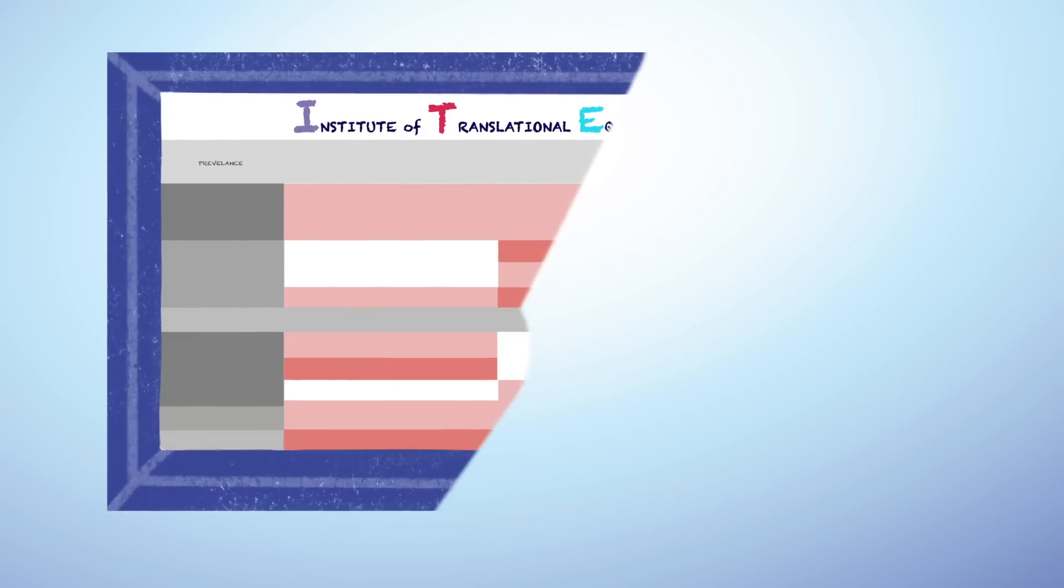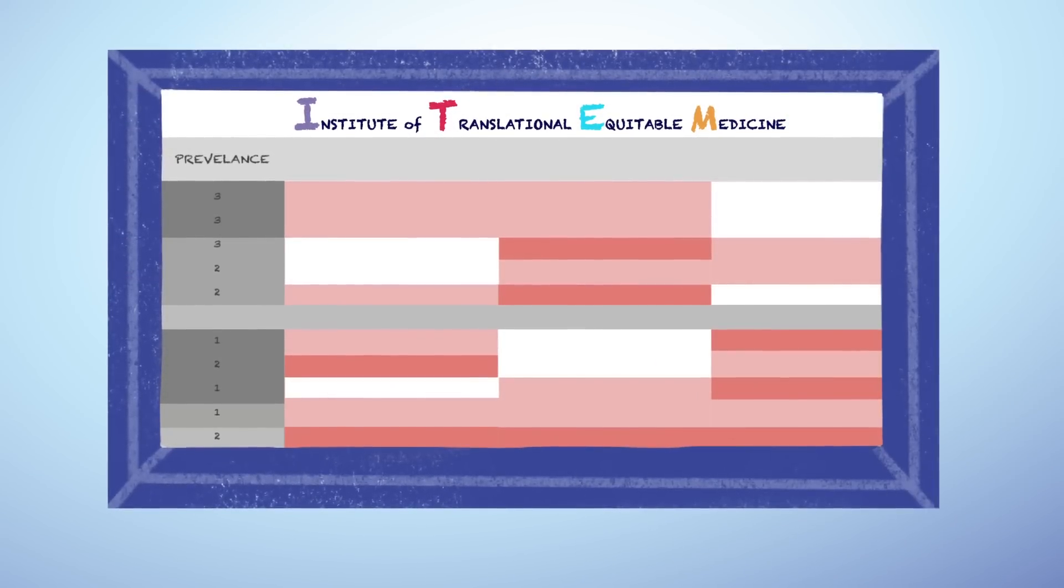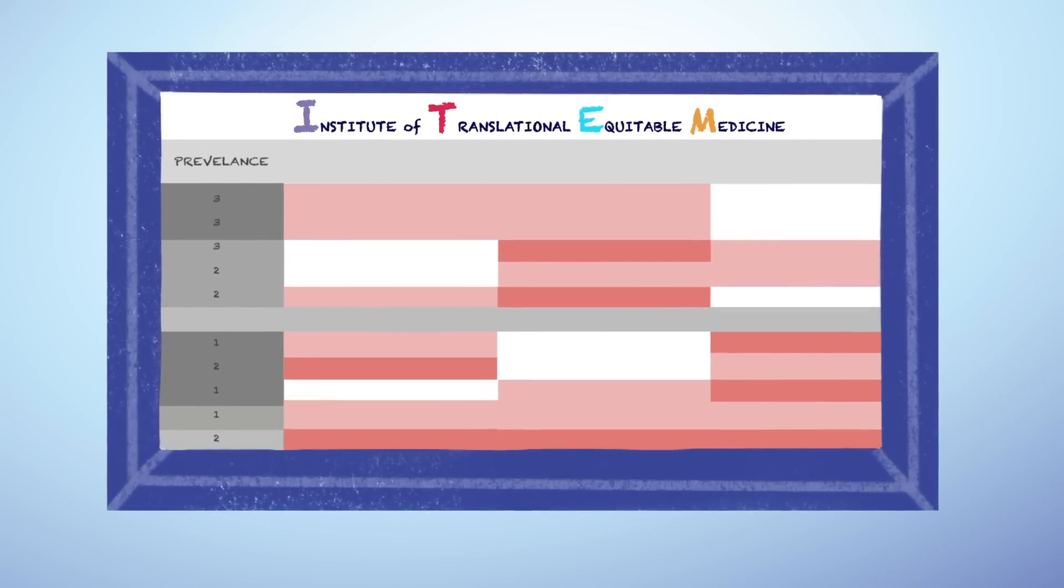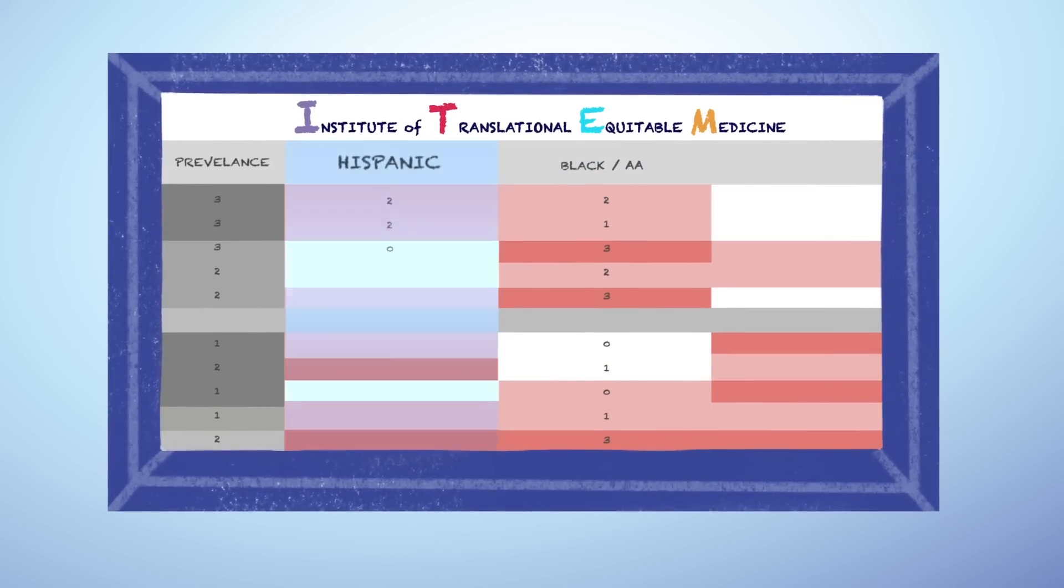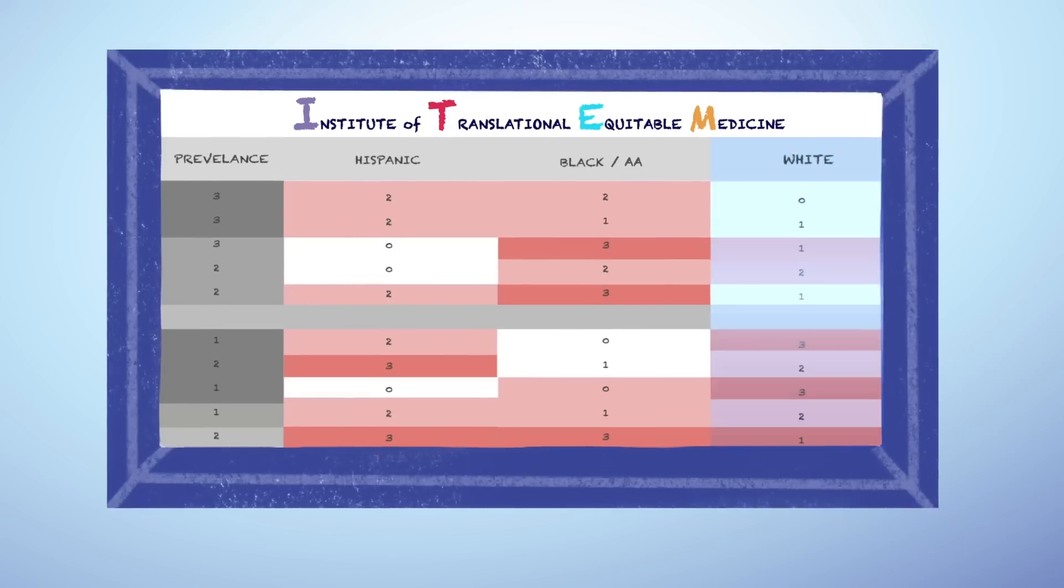Following our review, we translated our data into an easy-to-read heat map, comparing the differences in disease rates and severity between Black, Hispanic, and non-Hispanic white populations.